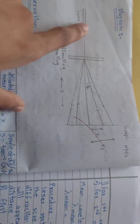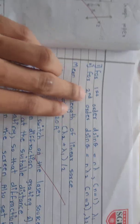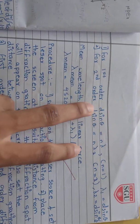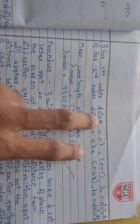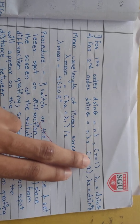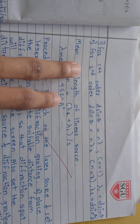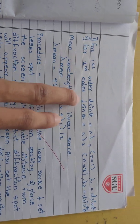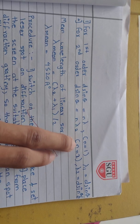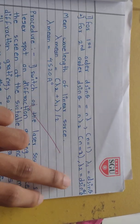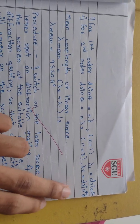For the first order, the formula is d sin theta equals n lambda. Put n equals 1, we will get this answer. Then second order: d sine theta equals n lambda 2, where n equals 2, and we get d sine theta by 2.